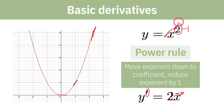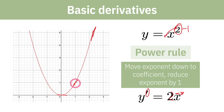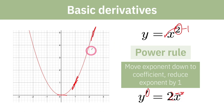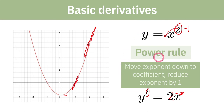Why does that matter? If x = 1, the slope is 2(1) = 2 — and on the graph, you can confirm the slope there is 2: up 2 over 1 in either direction. When x = 2, the slope is 2(2) = 4 — you'd go up 4 over 1 at that point, twice as steep as at x = 1. So the derivative gives us the slope of the curve at whatever x value we care about.